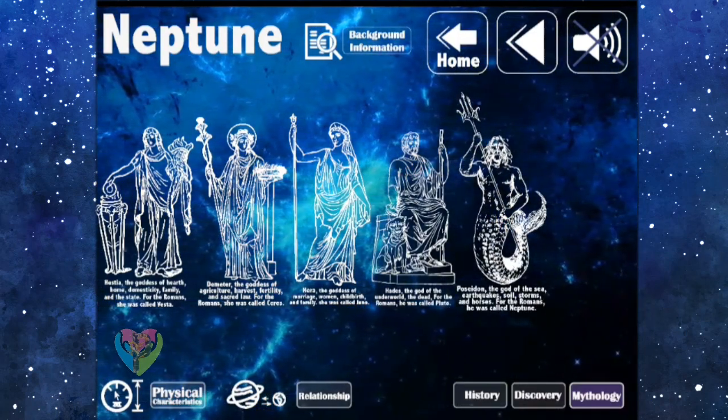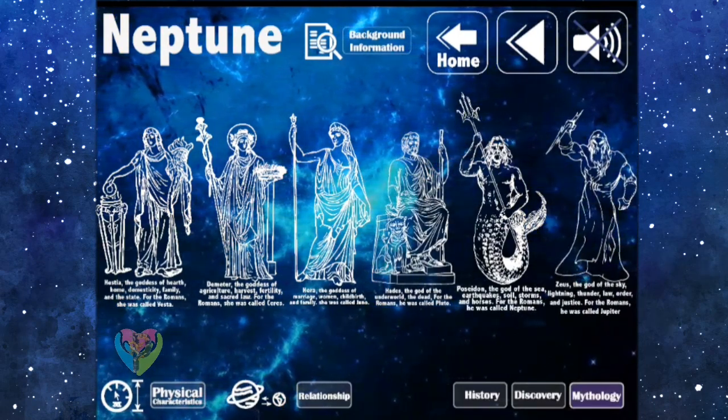5. Poseidon: The god of the sea, earthquakes, soil, storms, and horses. For the Romans, he was called Neptune.